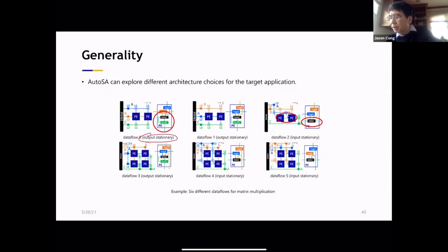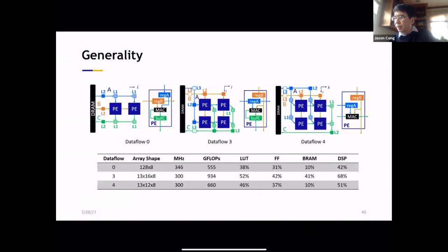For example, if you look at this one, I call this output stationary, because you have a memory that actually buffers C to accumulate the result as you go. Another case is that I call input stationary. The result is actually passed to the next neighbors for accumulation. All of them are possible.